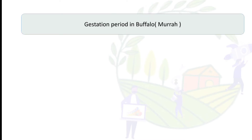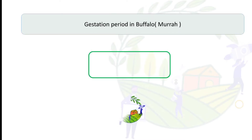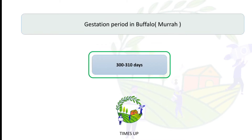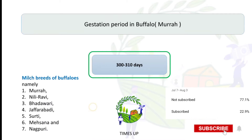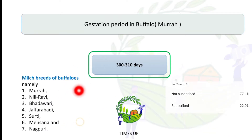The gestation period in Buffalo, that is Murrah, is 300 to 310 days. The important milk breeds in buffalo are Murrah, Nili-Ravi, Badawari, Jaffarabadi, and Nagpuri. Surti is the smallest buffalo breed.